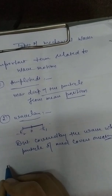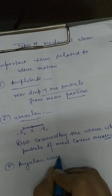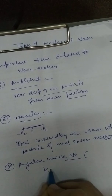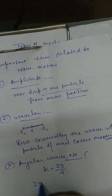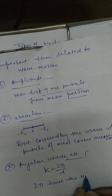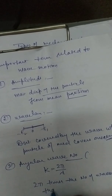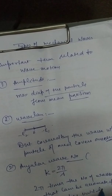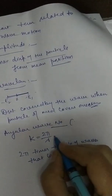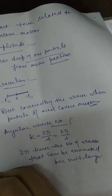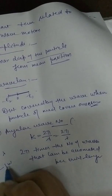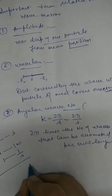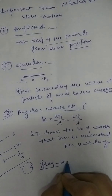Third: angular wave number k, also called propagation constant — it equals 2π/λ. It represents 2π times the number of waves that can be accommodated per unit length (i.e., 2π × 1/λ). Fourth: frequency — the number of oscillations completed in one second, or the number of wavelengths traversed in one second. Angular frequency ω = 2πν.